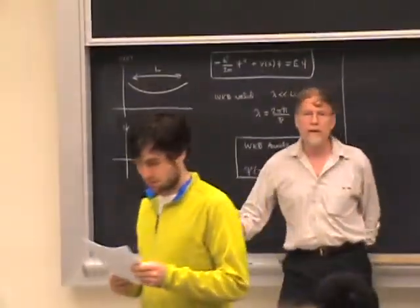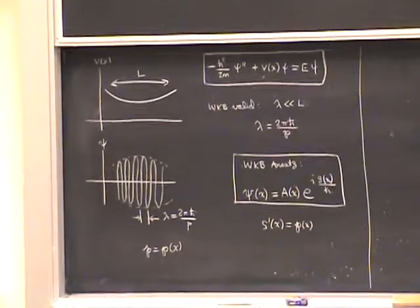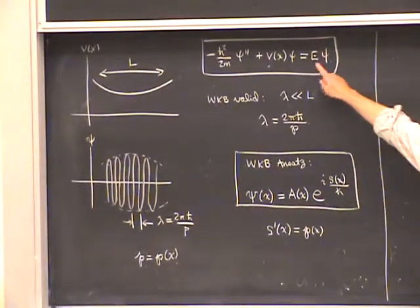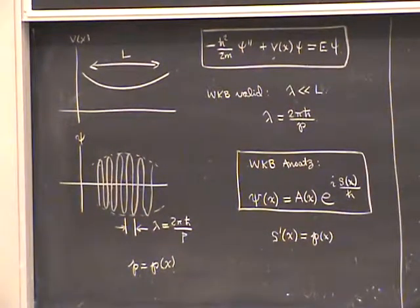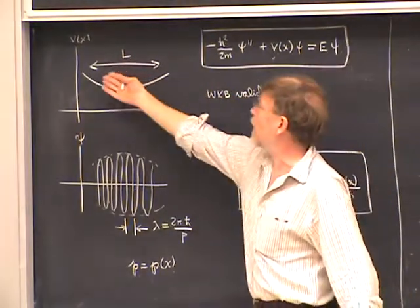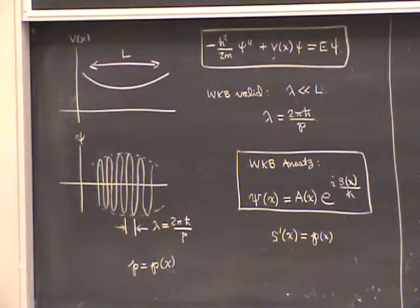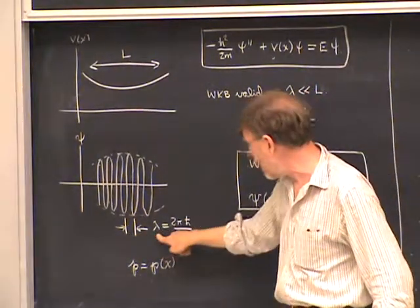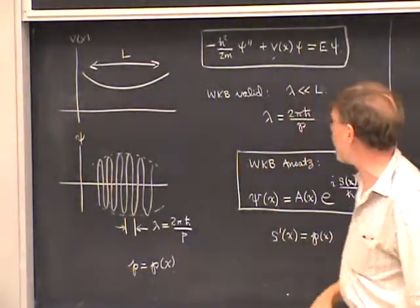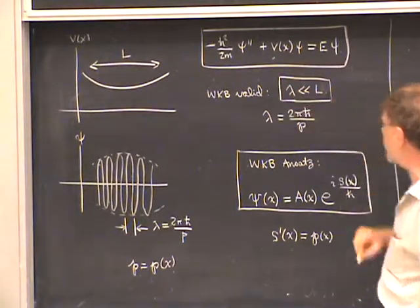We're looking at one-dimensional WKB theory, so we want to solve the Schrödinger equation in one dimension, and solve for energy V. We're interested in the situation in which the de Broglie wavelength of the wave function, which we call lambda, is much less than the scale of the potential, which I call capital L. That's the condition of validity of WKB theory: lambda is much less than L.